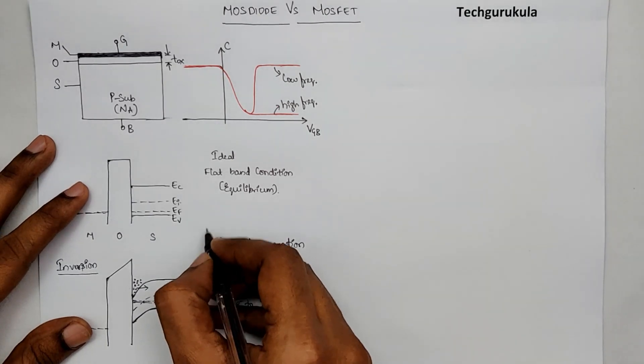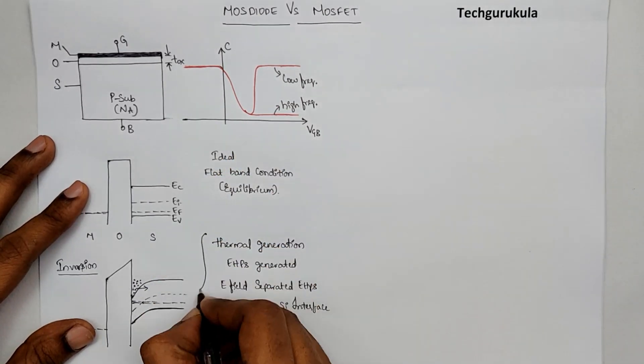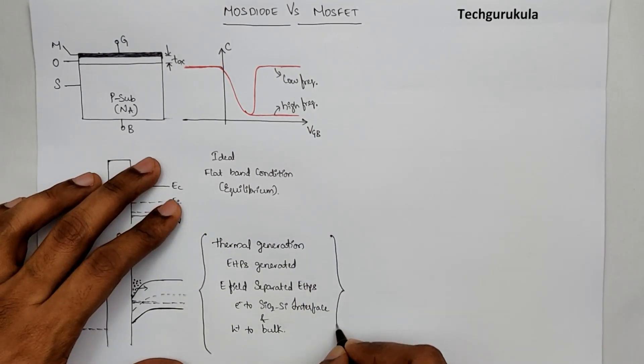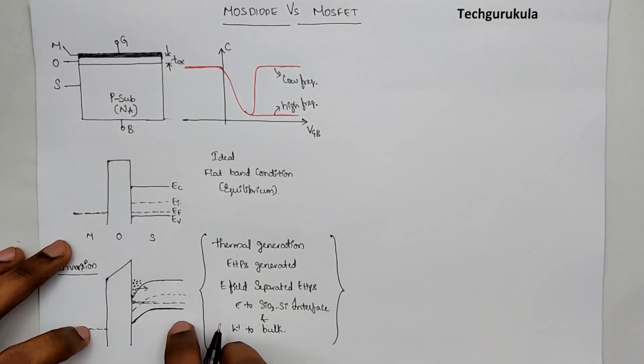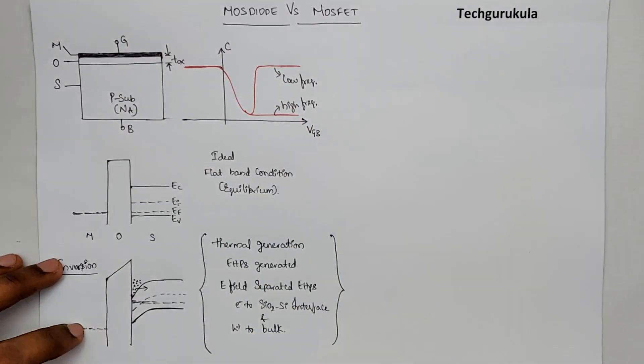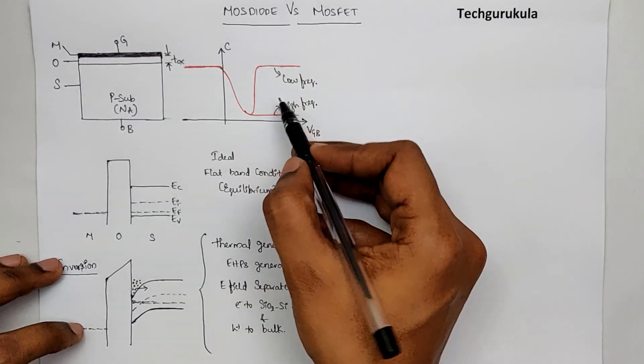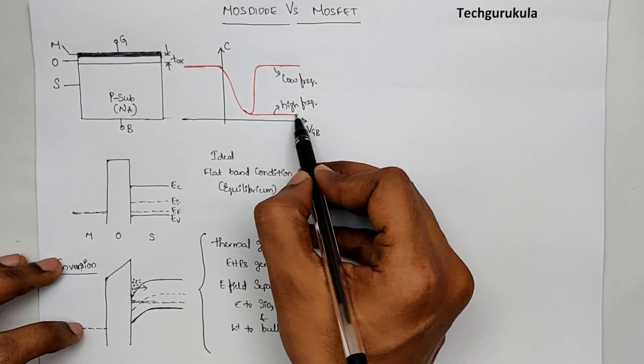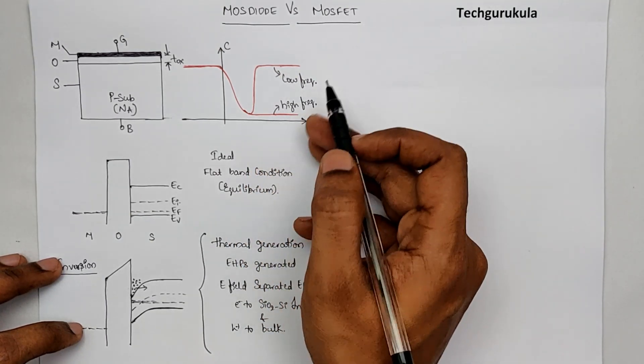But at higher frequencies of operation, this entire process takes time. So we wouldn't get the inversion charge to accommodate the change of voltage across the MOS diode or MOS capacitor. Hence, we got at high frequency a CV characteristics where we didn't actually have the inversion charge coming in.